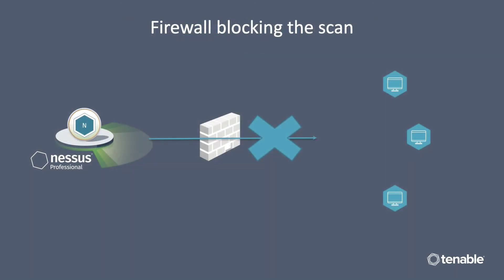Second, if there was a firewall in between your Nessus Professional and the targets that you're trying to scan, this could affect results as well. Firewalls block ports that are scanned and can greatly affect the results. In addition, this could also give you a false sense of security where you could believe that certain ports are closed, but it may be the firewall that has blocked those ports and not the target system.